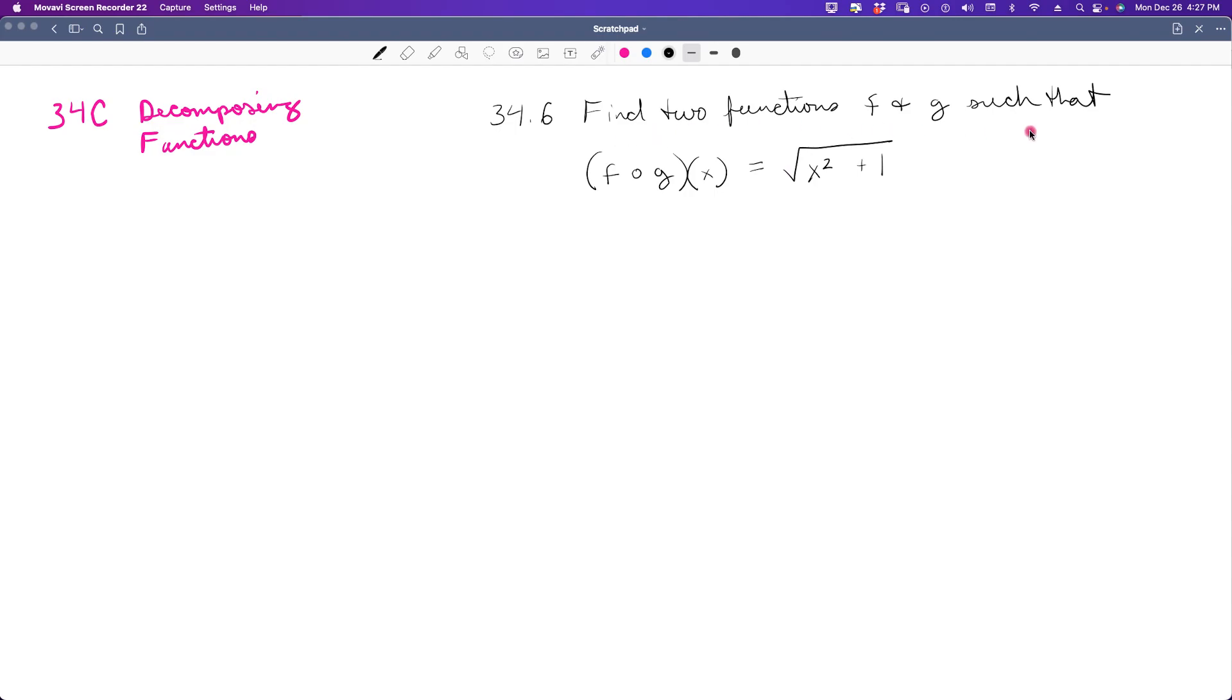The problems look like this. It says find two functions, f and g, such that f of g of x is equal to the square root of x squared plus 1.